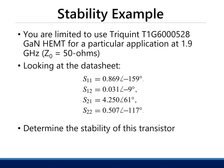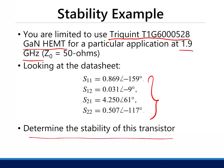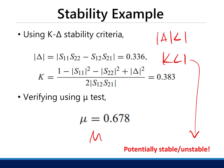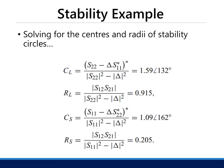For example, let's say you can only use a certain transistor, and at 1.9 GHz, these are its S-parameters from the datasheet. We want to determine its stability. Using the K-delta criterion: |delta| < 1, which is good; however, K < 1, which is bad — that means it is potentially unstable. We verify using the mu test: mu < 1, again pointing to potential instability.